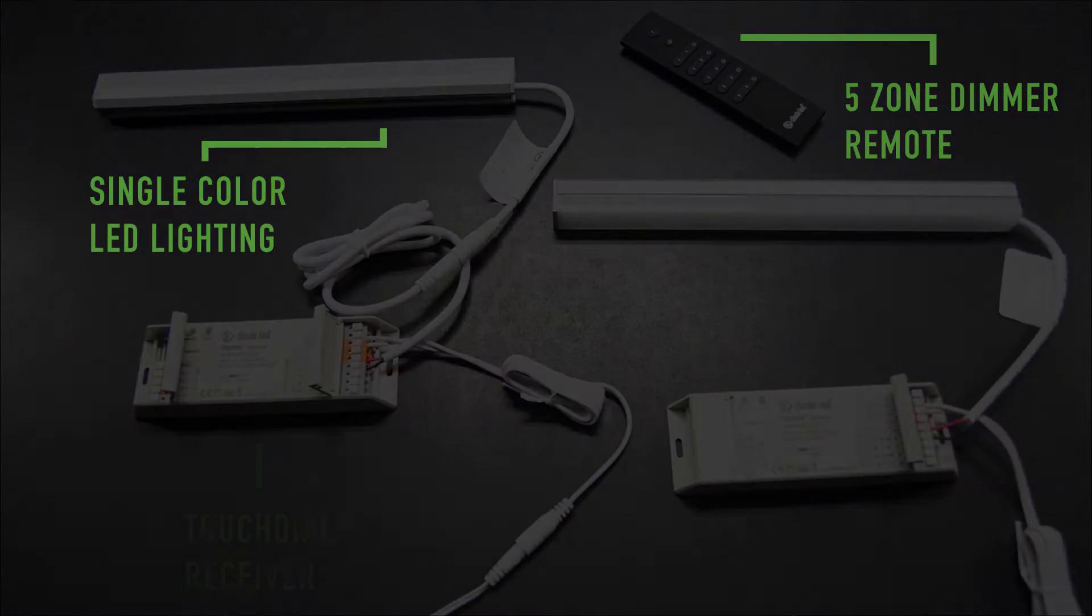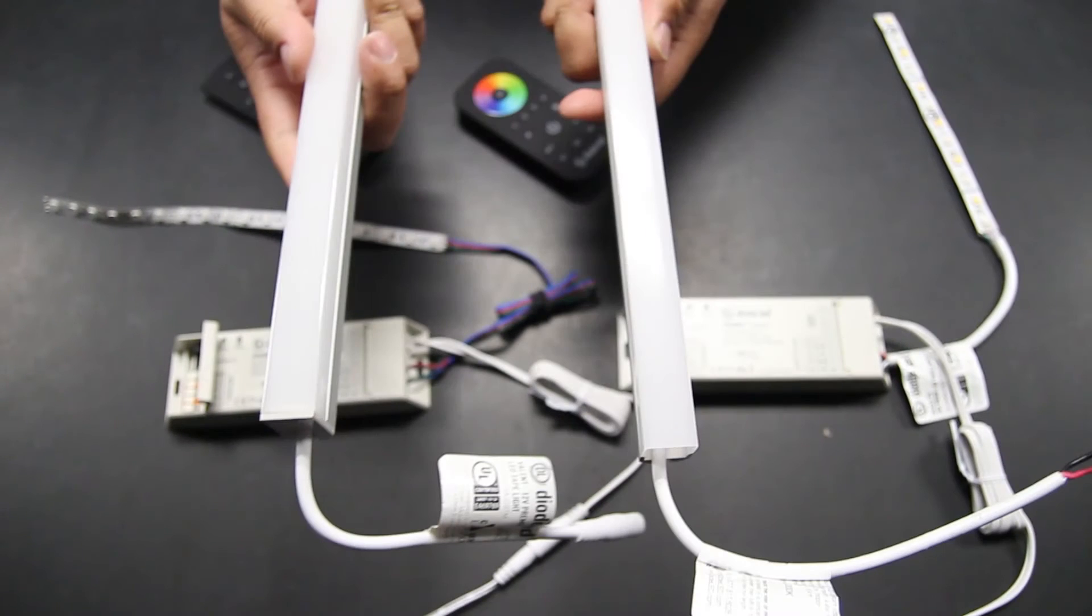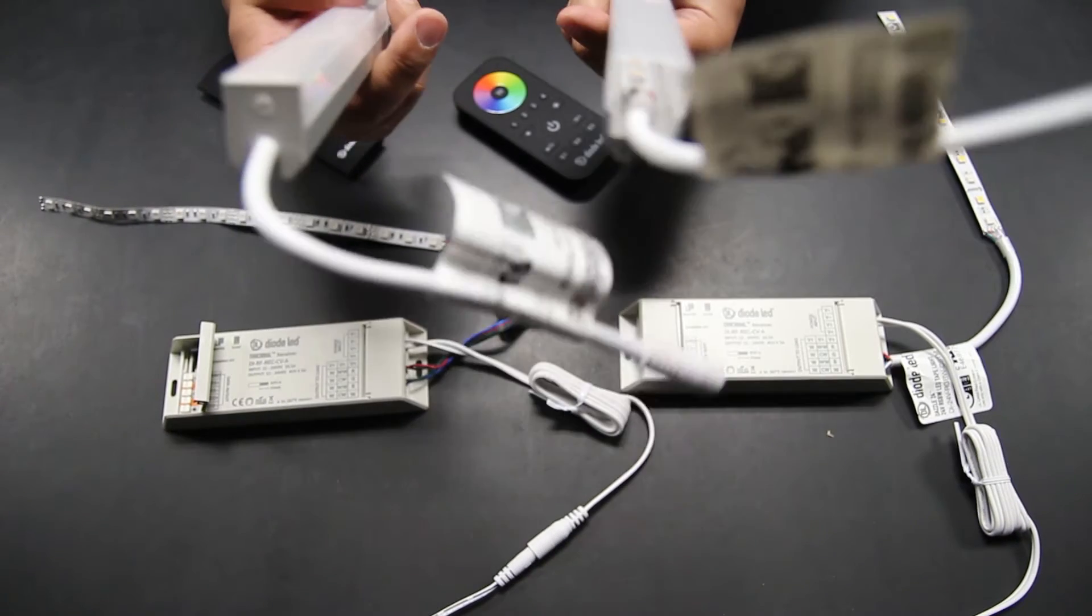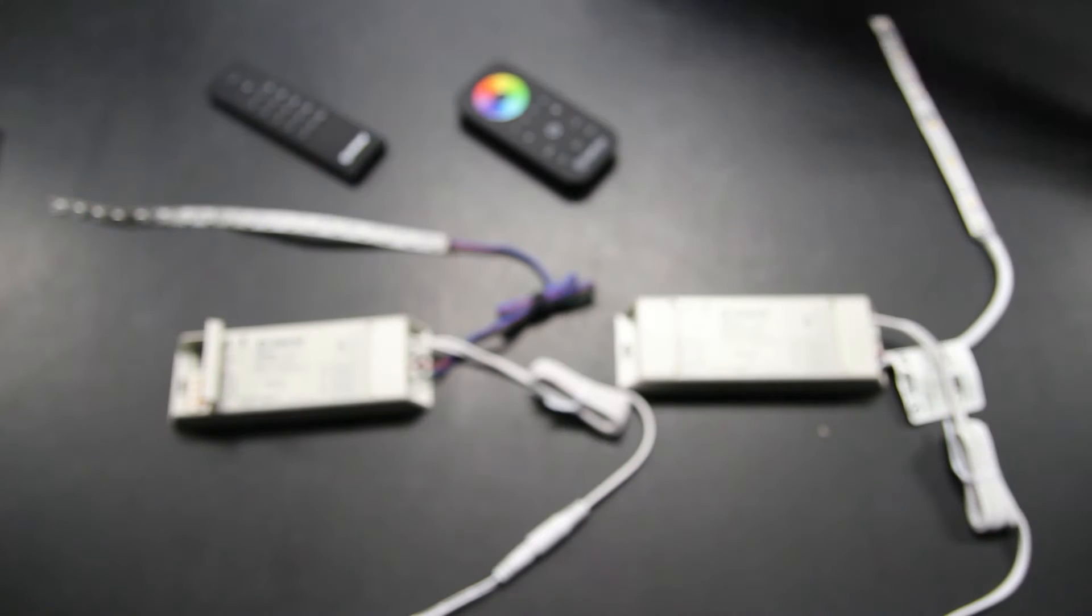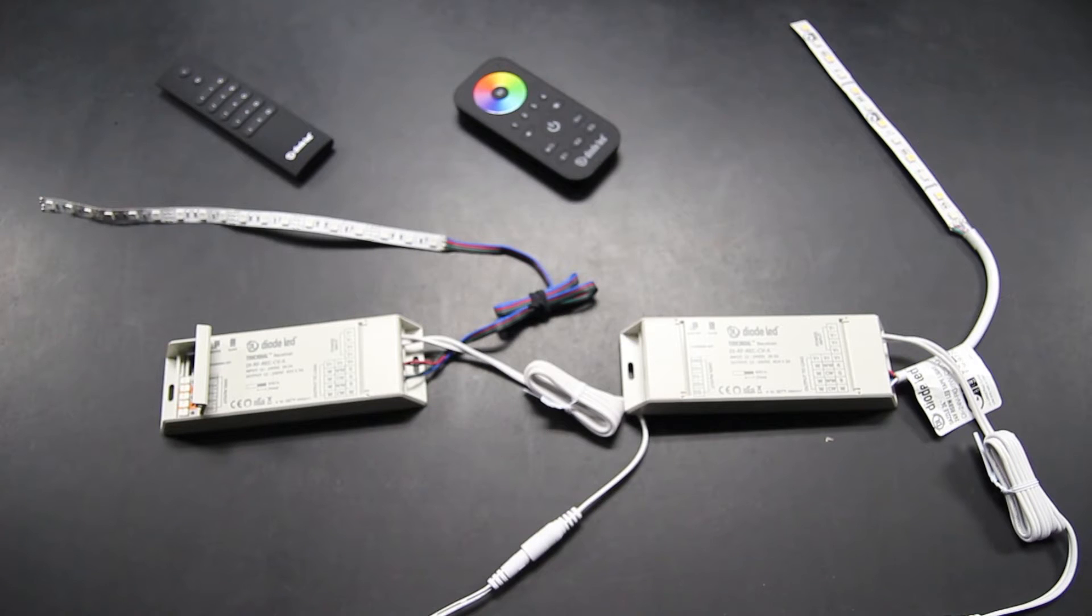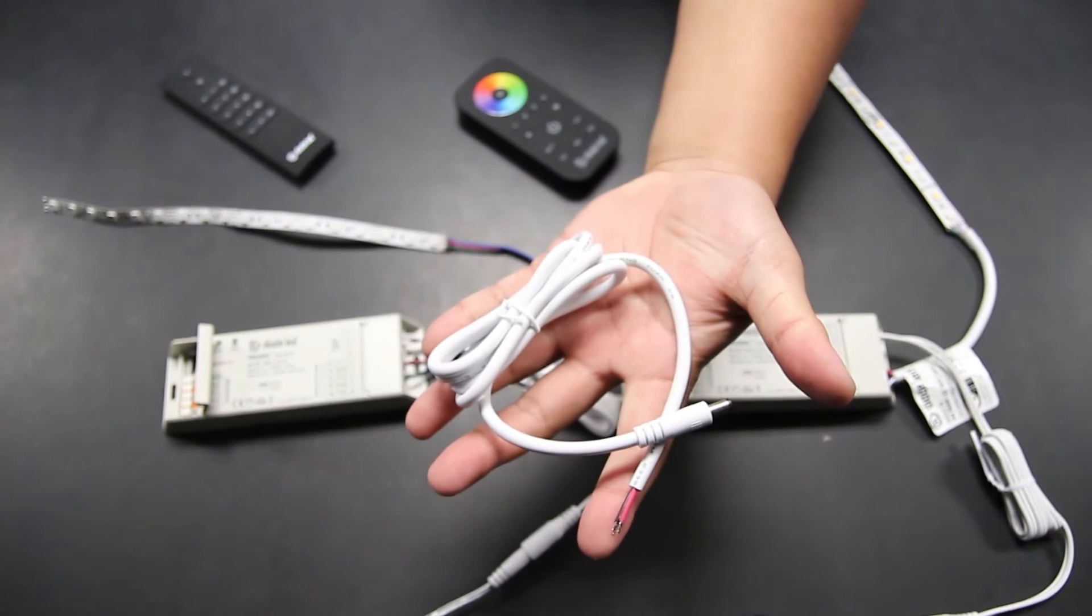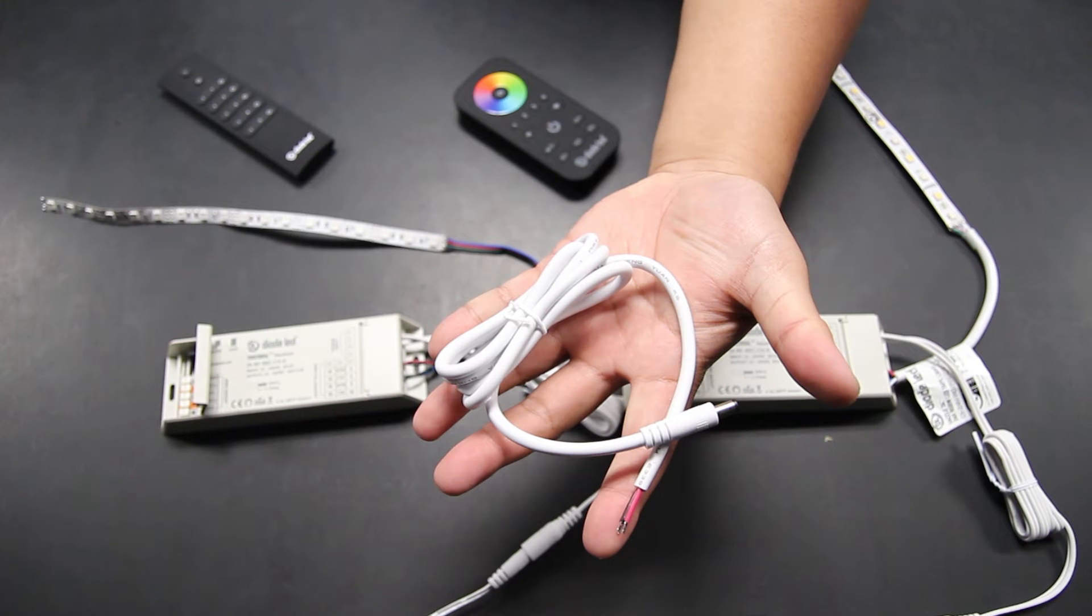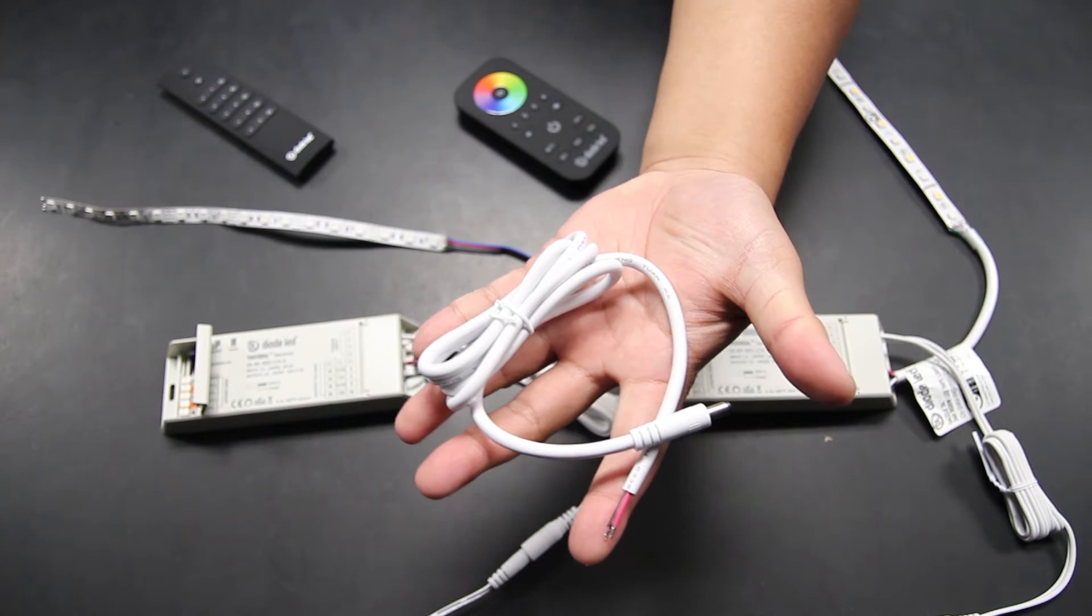In this example, we'll be using Diode LED tape light installed in our Chromopath aluminum channels with premium diffusion lenses. Depending on which power supply is being used, some additional accessories will be required. For our demo, we're using our plug-in adapters which will require a female adapter splice cable to complete our installation.